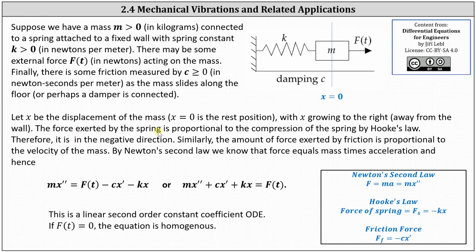The force exerted by the spring is proportional to the compression of the spring by Hooke's law, indicating the force of the spring, F_s equals negative kx. It's negative because the force is in the opposite direction of the force of the mass. Similarly, the amount of force exerted by friction is proportional to the velocity of the mass, indicating the force of the friction, F_f equals negative cx prime, where x prime represents the velocity. And again, notice how it's negative because it'll be in the opposite direction the mass is moving.